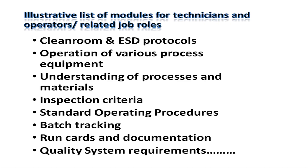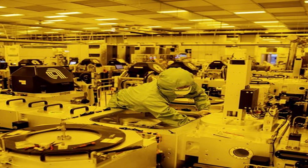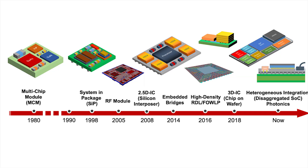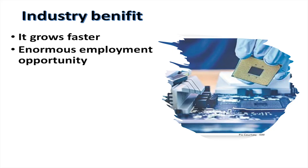Some common skills useful across many high-tech industries include training in clean room and ESD protocols, inspections, batch tracking, run cards, and documentation. When we talk of ATMP specifically, people will need knowledge of the specific processes involved, basic understanding of how the tools operate, their principles, process details, and inspection criteria. If people have this kind of background knowledge, it is easier for them to get absorbed in the industry, the industry benefits, it grows faster, and it is an enormous employment opportunity for the coming generation.